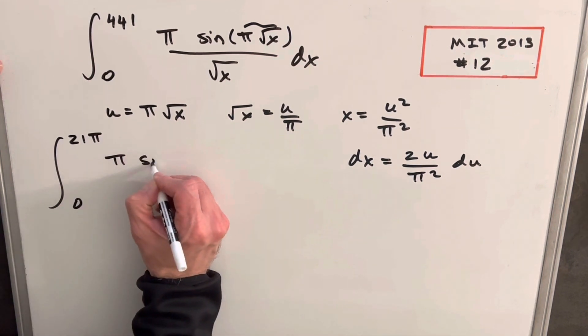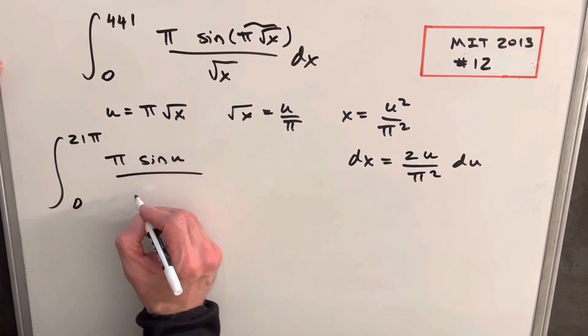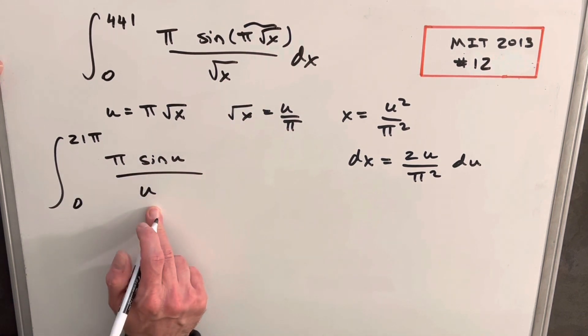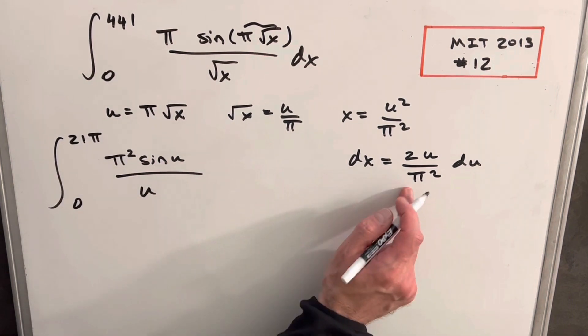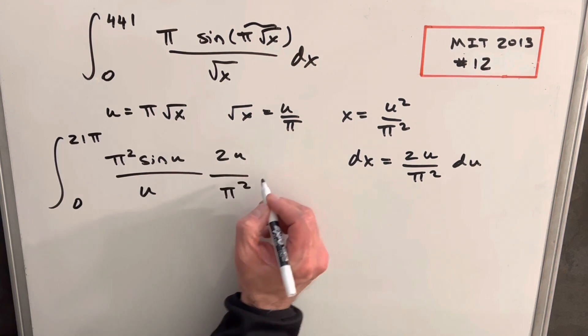Then next we're going to have pi sine of u, and we determine square root of x is just this, so it's going to be u over square root of pi, but I'll put that in the numerator and write this as pi squared. And then for our dx value, we have it over here, we're going to have 2u over pi squared du.